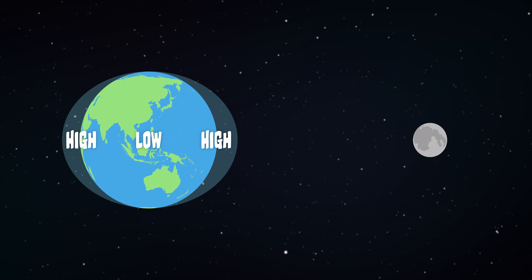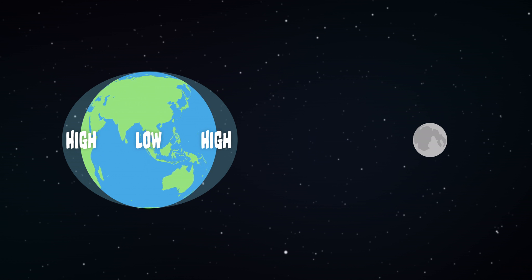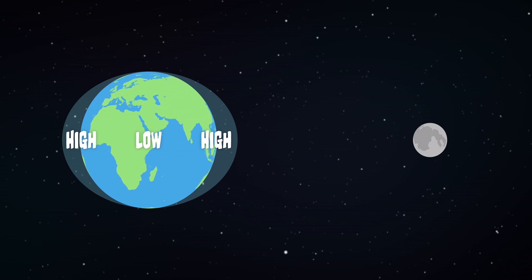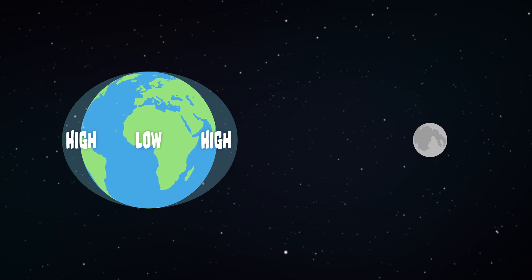Oppositely, the low tides are at a 90 degree angle from this. It takes the Earth one day to complete one rotation, so in that time, any given place on the Earth experiences each point along the ellipse. This results in two high tides and two low tides in the course of a day, or tidal cycle. This is referred to as a semi-diurnal tidal cycle.